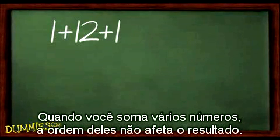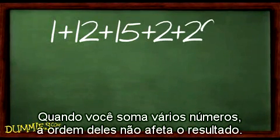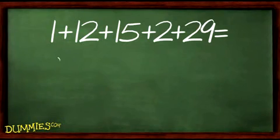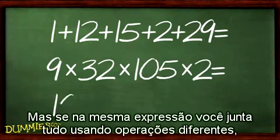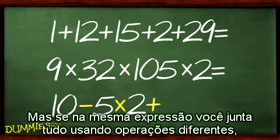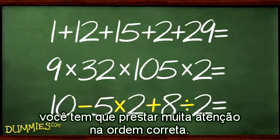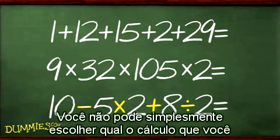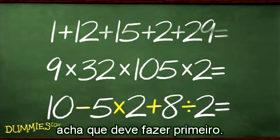When you add together a whole string of numbers, the order of how you add them is not important — you can use any order you want. The same is true for multiplication. But as soon as you mix things up with different operations in the same expression, you have to pay close attention to the correct order. You can't just pick and choose what to do first, next, and last.